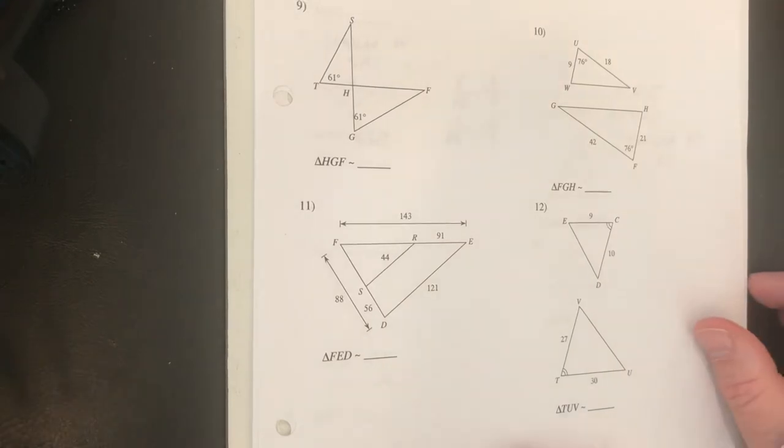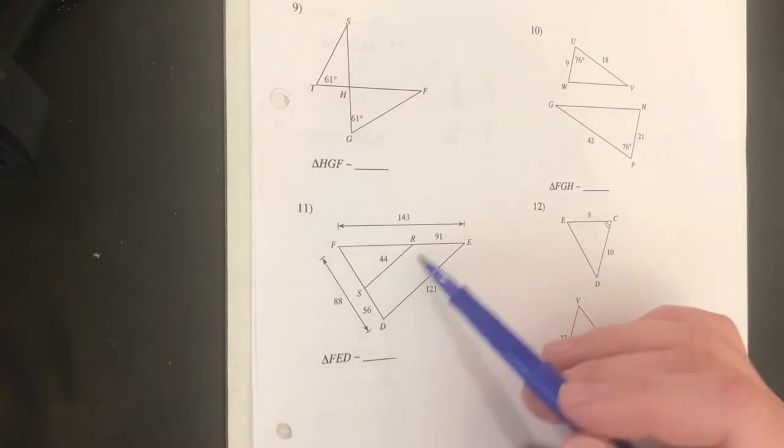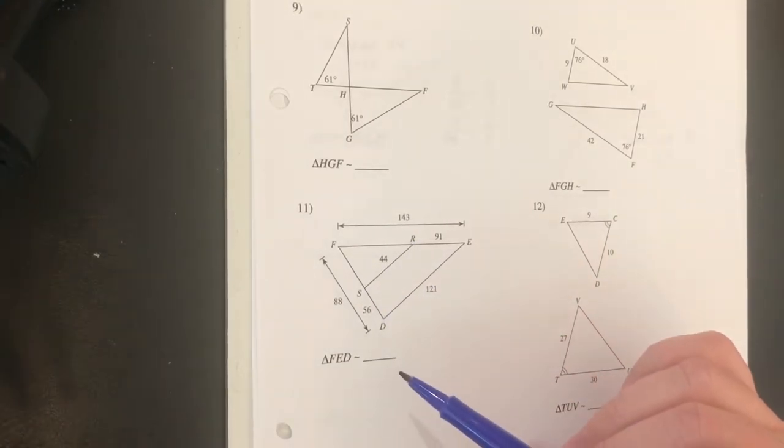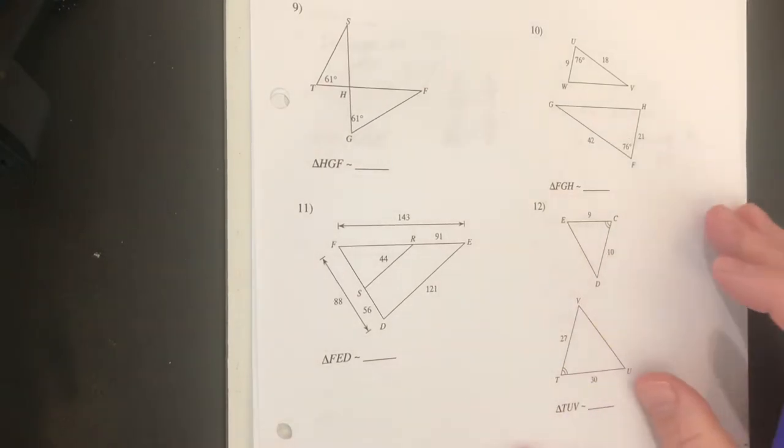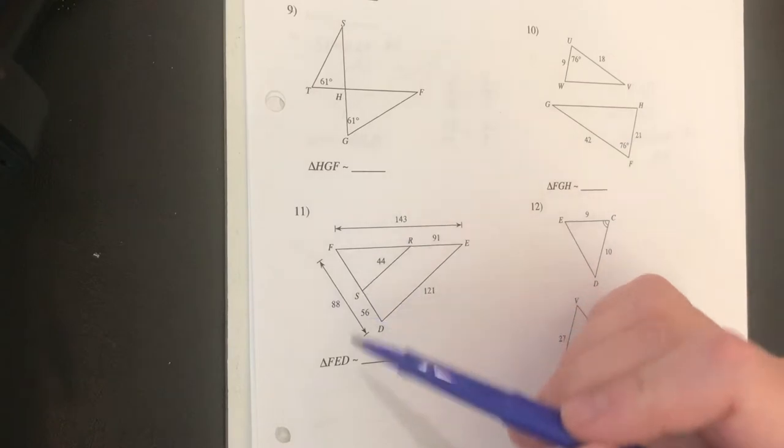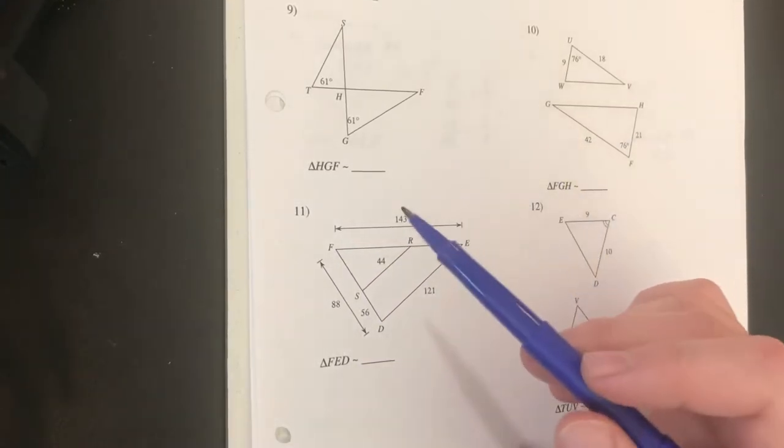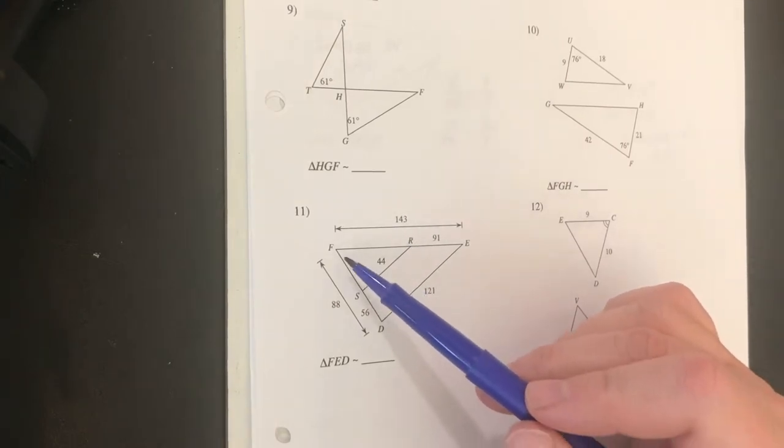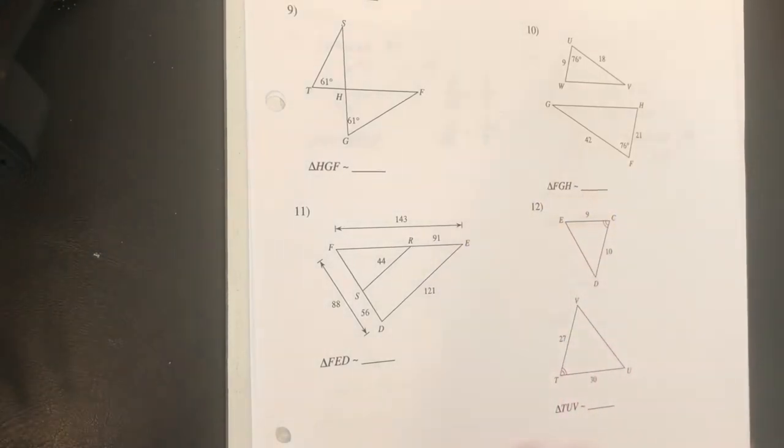The first one, our instructions are to determine if these two triangles are similar and then to determine what the correct similarity statement would be if they are similar. Well first we need to identify the two triangles. The first one from this similarity statement is FED so it's the big one. The second one then must be FRS or the smaller embedded one and we've got quite a bit of information here.